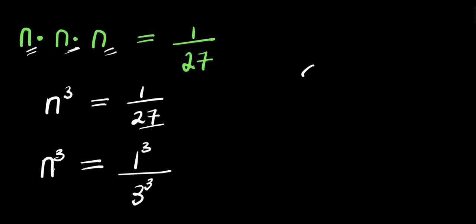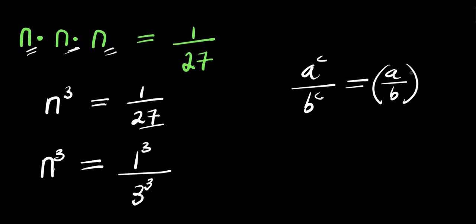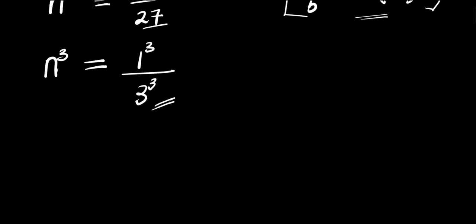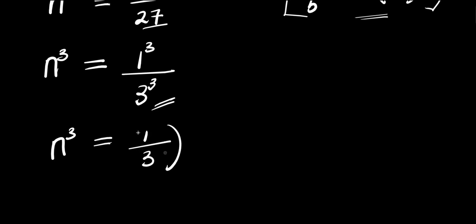So if you have a to the power c divided by d to the power c, this equals a divided by b, all to the power of c. So we apply this identity. That means we are going to have n cubed equals 1 divided by 3, all to the power of 3.